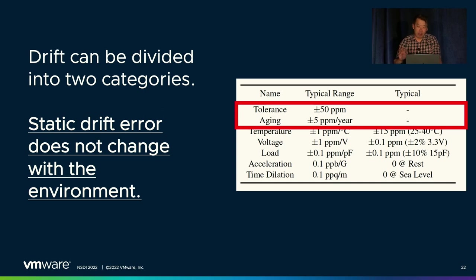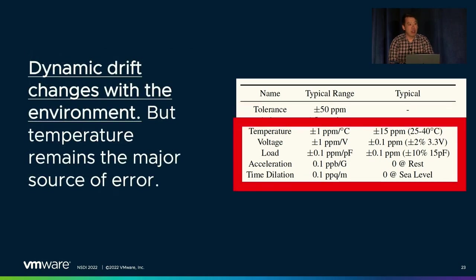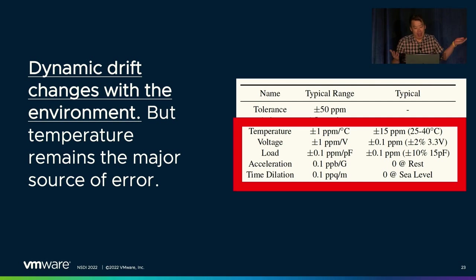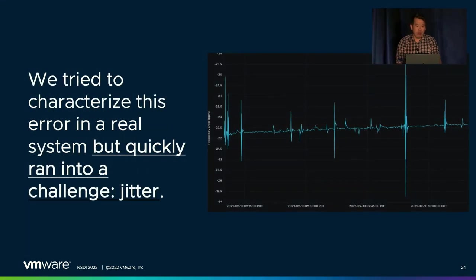Crystals also age: over time they don't vibrate at the same frequency because they're mechanical devices, but this change usually happens in the first year. What we were really concerned about were sources of dynamic drift — particularly sources that might explain this 200 ppm error. But we found that other sources of error were very minimal compared to temperature. For instance, you'd have to essentially fry the server before voltage changes would have any real effect, and servers in data centers generally aren't moving or subject to time dilation, which is actually a serious concern for satellites flying in space.